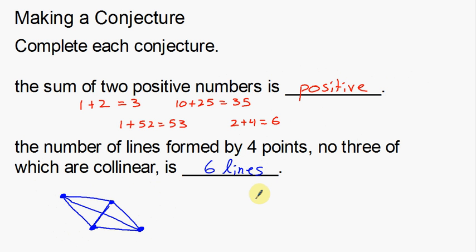What I've made there is actually a quadrilateral with the diagonals created — that's vocabulary for another time. That is making a conjecture. A conjecture is a conclusion made using inductive reasoning. Inductive reasoning uses prior experience, logic, and reasoning to come to a conclusion. Our conjectures here were: the sum of two positive numbers is always going to be positive, and the number of lines formed by four points, no three of which are collinear, is six lines.